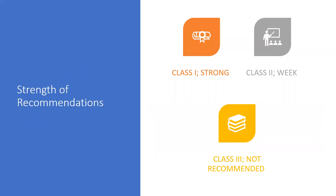The other concept we need to know is strength of recommendation. Recommendations are classified in three classes: class 1, which are strong recommendations; class 2, which are weak recommendations; and class 3, which are not recommended at all. Keeping these two concepts in mind — level of evidence and strength of recommendation — we'll now discuss certain risk factors which can be used as preventive strategies for Alzheimer's disease.